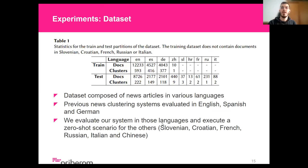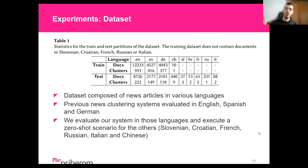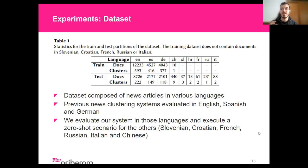Moving on to the experiments. We follow previous work and evaluate our system on a news clustering dataset proposed by European NewsRealia. This dataset contains mostly documents in English, Spanish, and German, but also significant amounts in Chinese, Russian, Slovenian, Croatian, French, and Italian. The dataset is composed of around 34,000 articles, divided into a training set of around 20,000 samples and a test set of about 14,000 samples. The training and test sets are in different time ranges, which guarantees that the news stories are different between the sets.